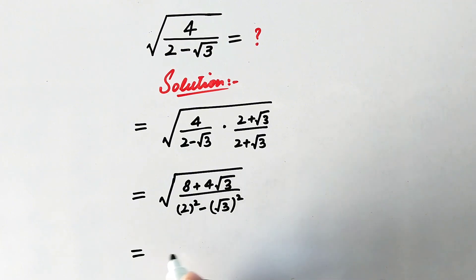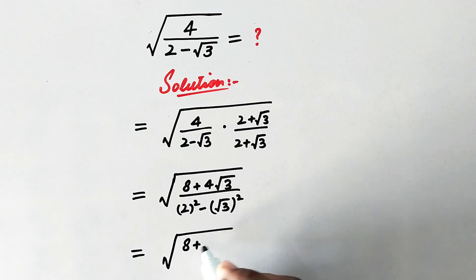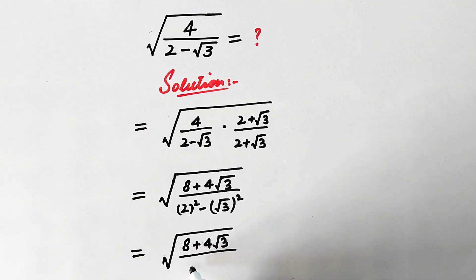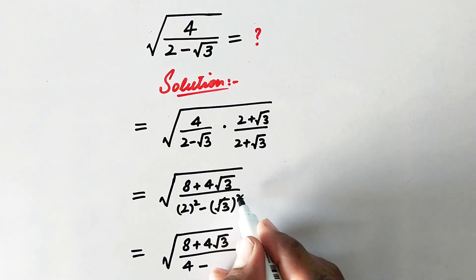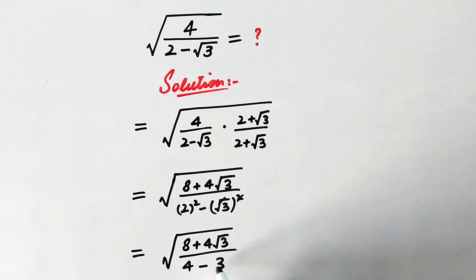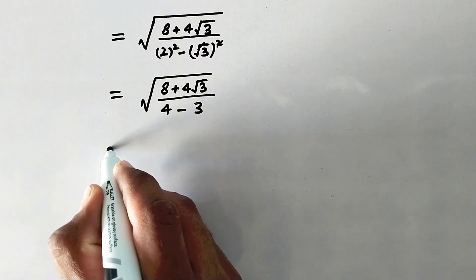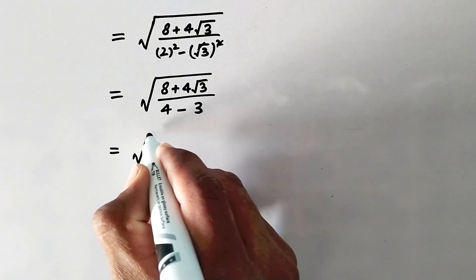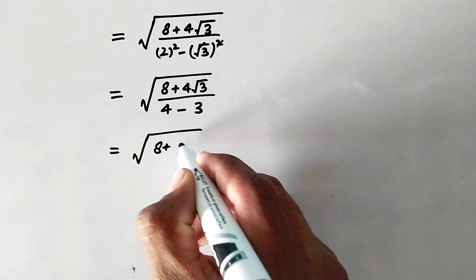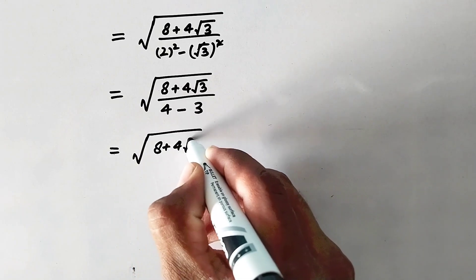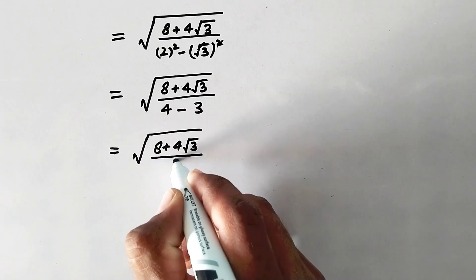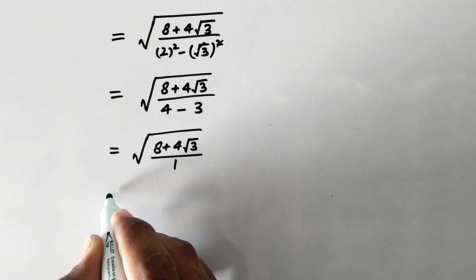So now it will be equal to square root of 8 plus 4 times square root of 3, divided by 2 squared minus square root of 3 squared. 2 squared is 4, and the square root and square cancel to give 3, so the denominator is 4 minus 3 equals 1. So now it is equal to square root of 8 plus 4 times square root of 3 over 1.